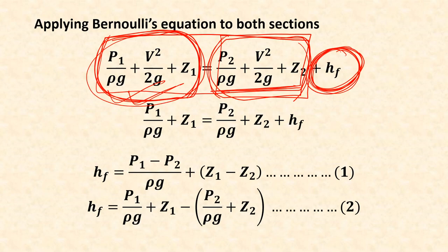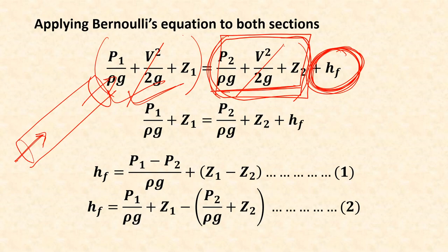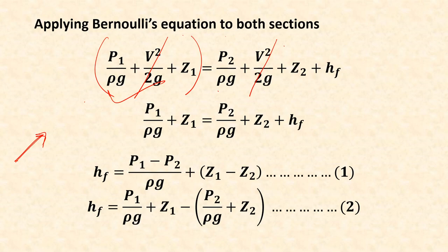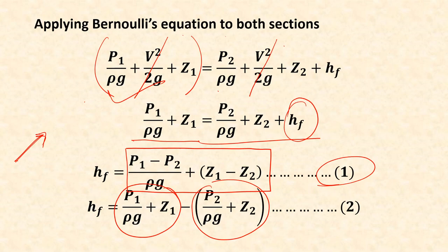Since we are dealing with a uniform cross-section pipe, the velocity at both cross-sections is equal by the continuity equation. Therefore the velocity head terms cancel out, and the remaining expression gives hf equal to the difference in pressure head plus the difference in datum head. This can also be interpreted as the difference between the piezometric head at section one and the piezometric head at section two.